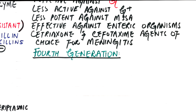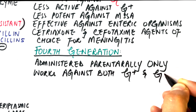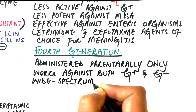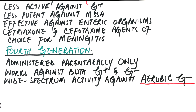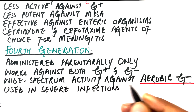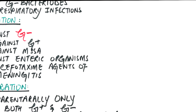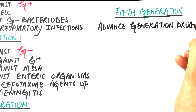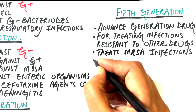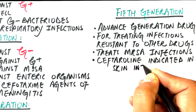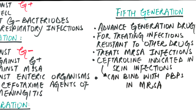Fourth-generation cephalosporins are administered parenterally only and work against both gram-positive and gram-negative bacteria. However, this class of drugs has wide-spectrum antibacterial effects against aerobic gram-negative organisms and is generally used for more severe infections or for those with weakened immune systems. The fifth generation of cephalosporin drugs is an advanced generation used to treat infections resistant to other antibiotics, including infections caused by MRSA. Ceftaroline is the only drug in the United States effective against MRSA and is majorly indicated in skin infections. The drug has a unique structure which allows it to bind with penicillin-binding proteins in MRSA and penicillin-resistant Streptococcus pneumoniae.